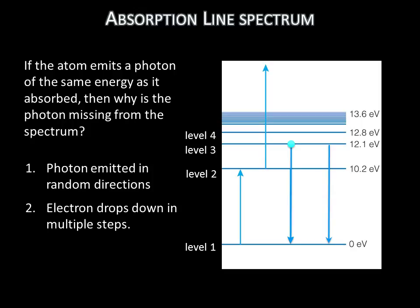For example, the electron can go from level 3 to level 1 or from level 3 to 2, emitting a lower energy photon, then from level 2 to 1.